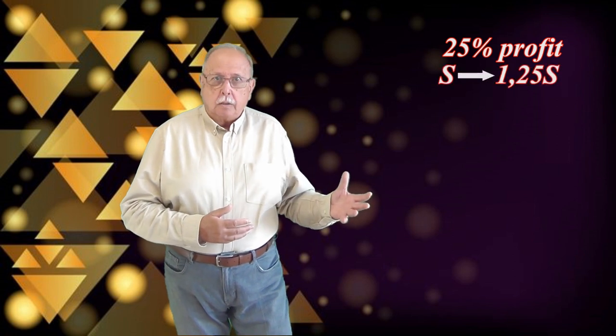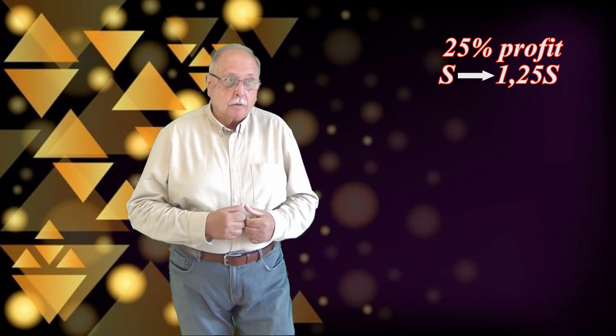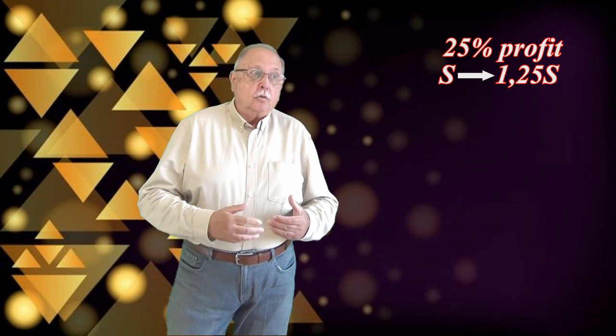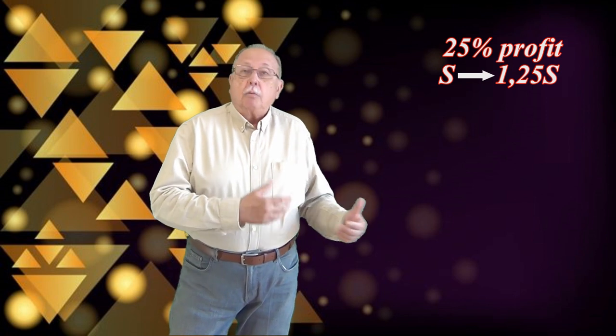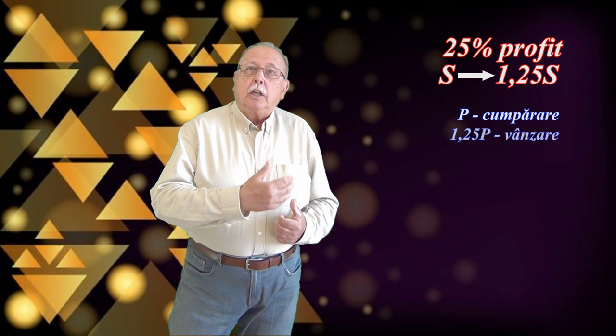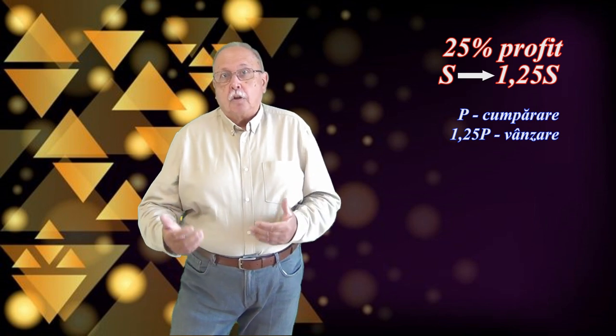Să vedem despre ce-i vorba. Un comerciant cumpără fructe de la Olivada și vrea să le vândă în magazinul lui cu un profit de 25%. Deci, pentru suma S cu care cumpără fructele, vrea să obțină prin vânzarea lor suma 1,25 înmulțit cu S, cu 25% mai mult. Pentru a obține acest profit, el trebuie, evident, să ceară un preț cu 25% mai mare la vânzare decât prețul la care a cumpărat marfa. Și asta și face. Dacă prețul de cumpărare pe kilogram la un anumit fel de fructe este, să zicem, P mare, prețul pe care îl cere la vânzare pentru fructele respective este 1,25 înmulțit cu P. De pildă, dacă cumpără fructe cu 10 lei kilogramul, le vinde cu 12,50 lei.